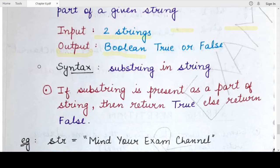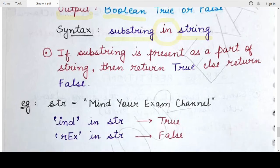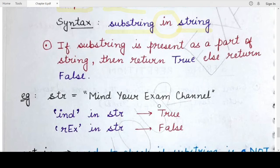The syntax is: `substring in string` — where substring is the string whose contents you want to check, and string is the one specified on the right-hand side of the membership operator.